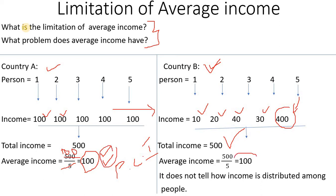So if you look at the average income of 100 rupees in both countries, it does not tell how income is distributed among people. The average does not reveal how income is distributed among the people.